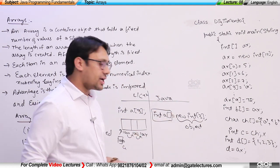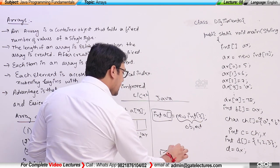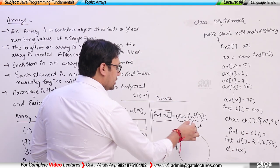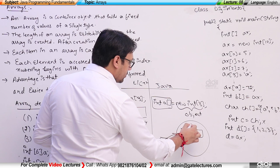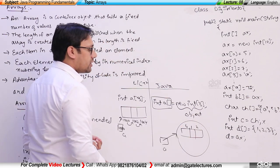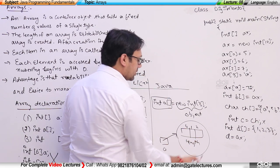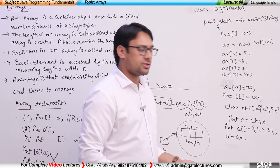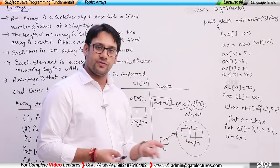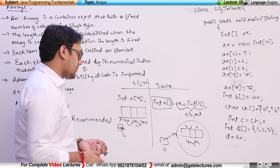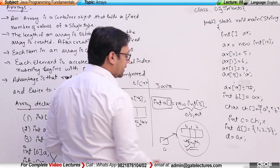If you represent it graphically, A is pointing to some object. In this object we have 3 index locations: 0, 1, and 2. Apart from this, there are some functions — or rather methods, as we call them in Java — that are already available. For example, there is a length property. There may be different kinds of methods that are already defined.